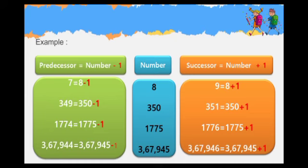Fourth one, 3,67,945. The successor of 3,67,945 is 3,67,946. The predecessor of 3,67,945 is 3,67,944.